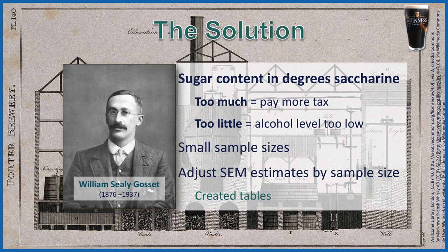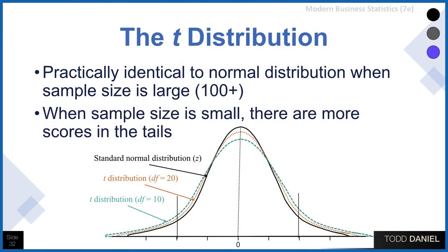What Gossett was able to figure out was how much adjustment had to be made when you're using a small sample size, and he put these adjustments into tables. Here's what a t-distribution looks like — the distribution that Gossett helped create.